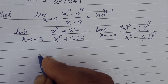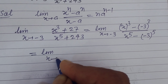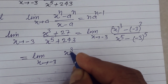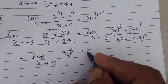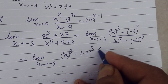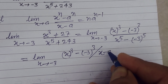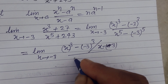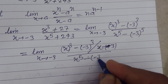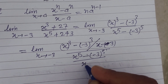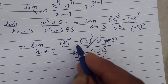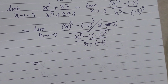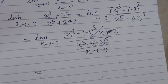Now we rewrite it by dividing both numerator and denominator by x minus (minus 3). So we have: x cubed minus (minus 3) cubed upon x minus (minus 3), divided by x to the power 5 minus (minus 3) to the power 5 upon x minus (minus 3).